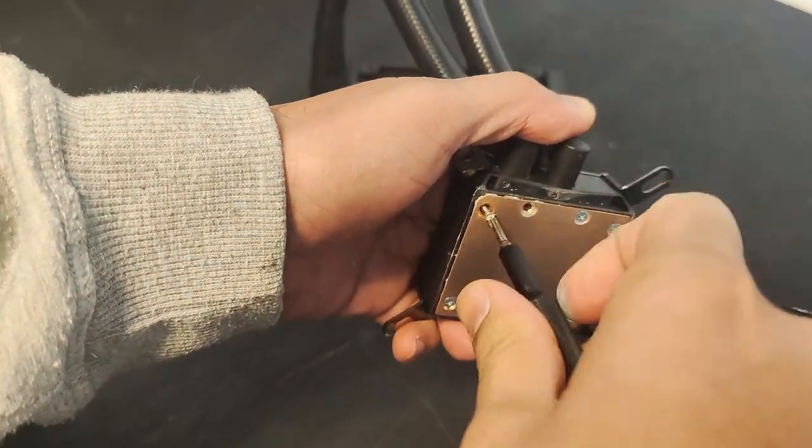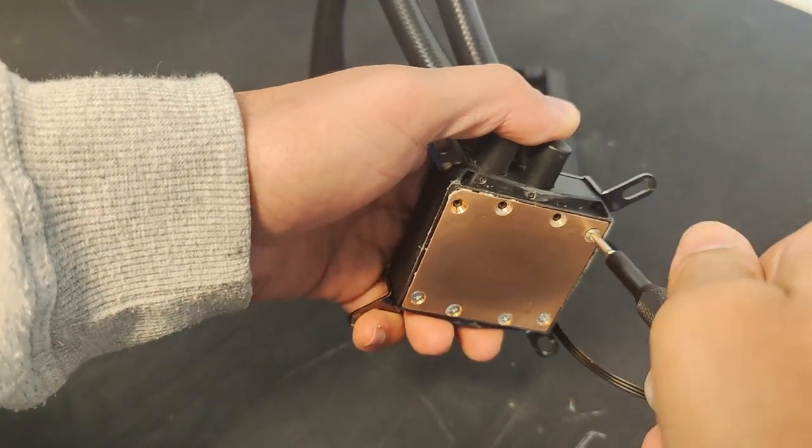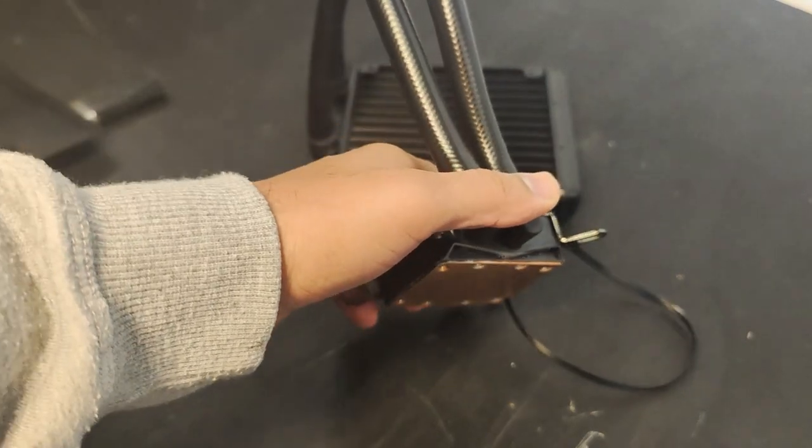Next thing you want to do is unscrew all the screws on the bottom of the AIO cooler so then you can get the cooling plate off of the AIO.